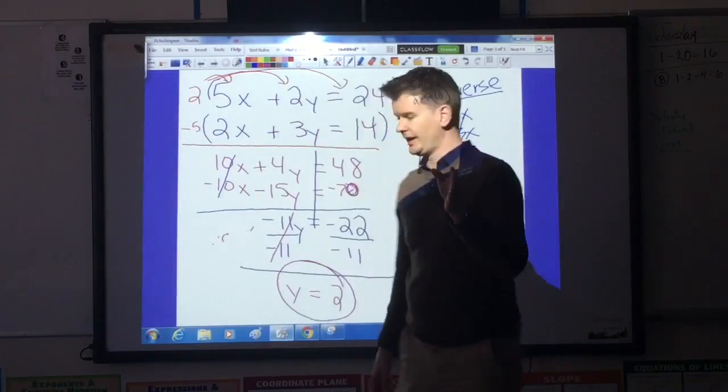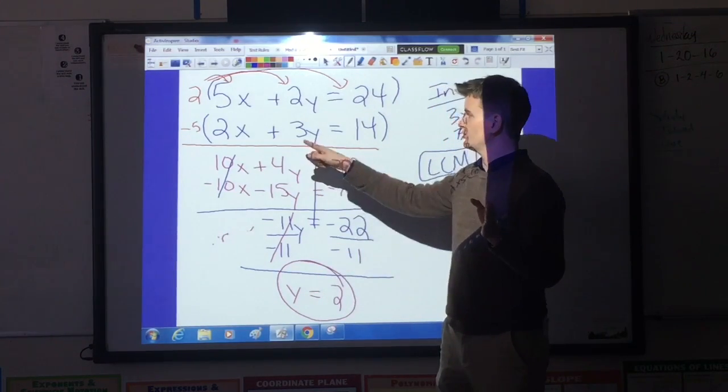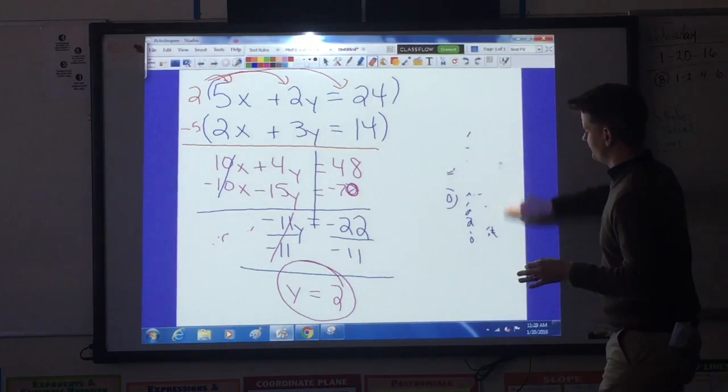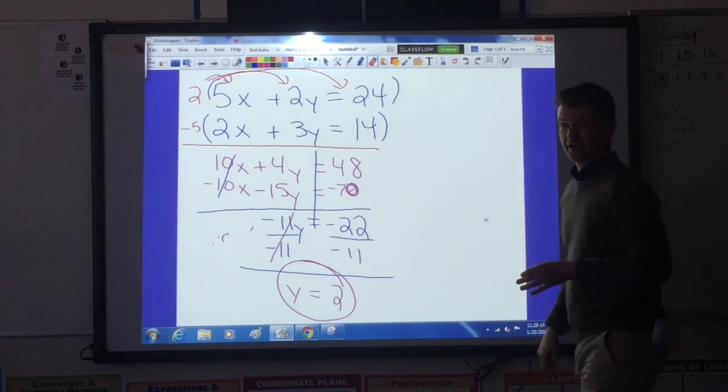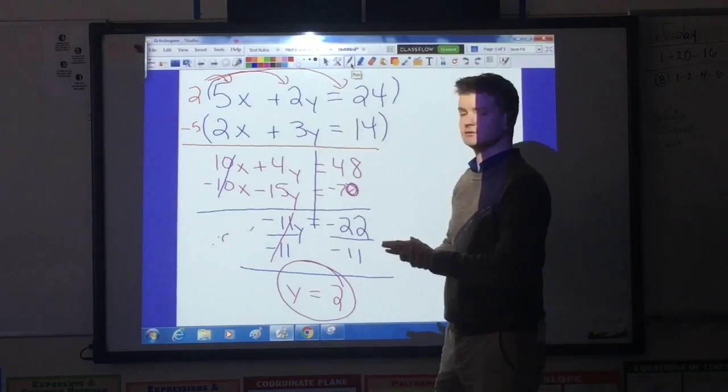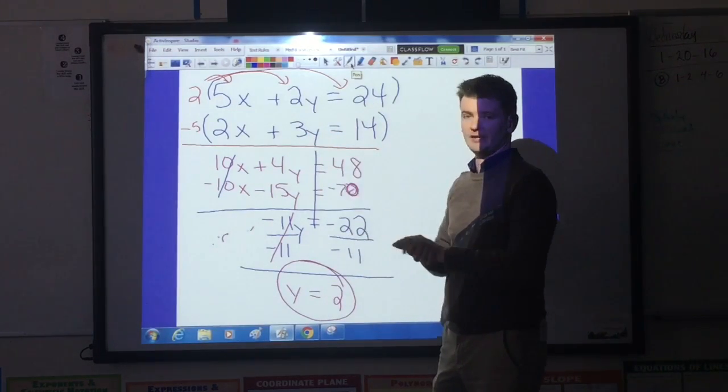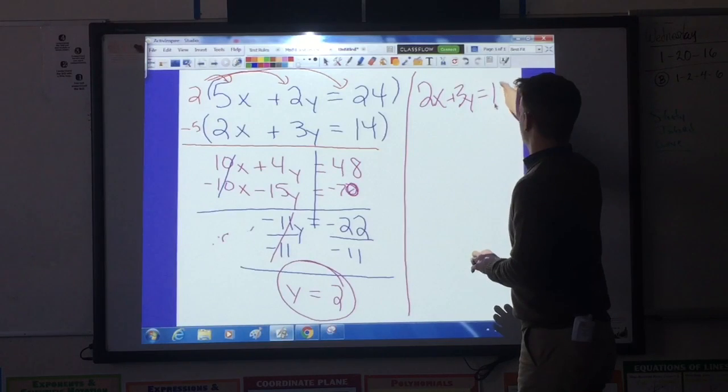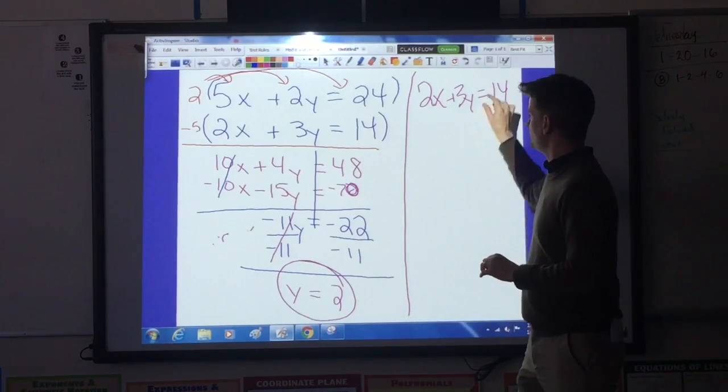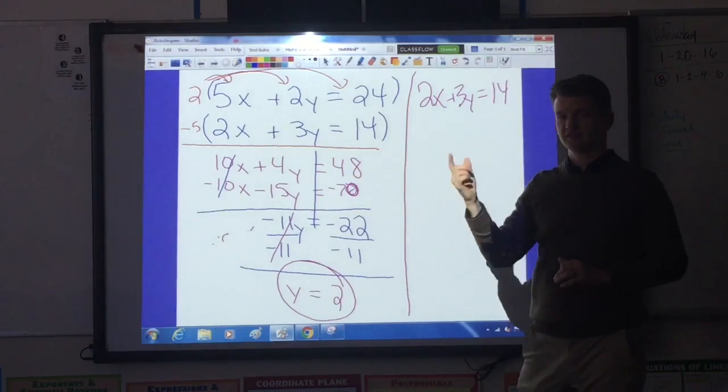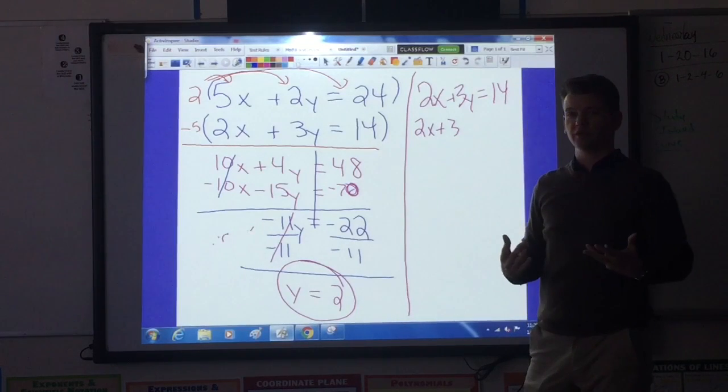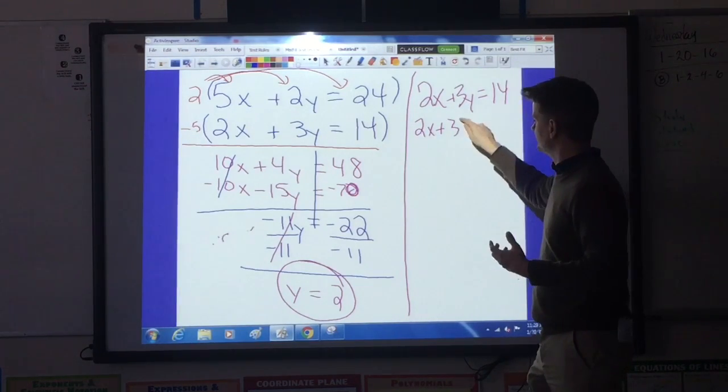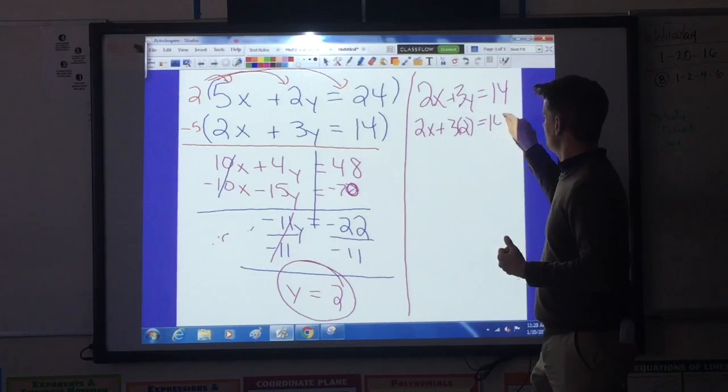Now that I know that y equals 2, I can take that piece of information, substitute it back into one of my original equations and solve for x. We're going to use this half of the board to find out what x is. We're going to pick one of these equations and substitute y back into it. I'm going to use the bottom one. 2x plus 3y equals 14. I know that y is 2. So in my equation, I'm going to be removing the y and replacing it with 2. Now, very important. There's multiplication happening between the 3 and the y. So when I substitute in the 2, multiplication starts to happen. I'll use parentheses to indicate multiplication. That's going to equal 14.